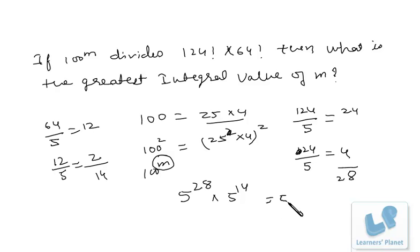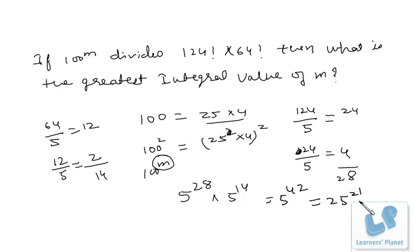That means precisely 5 raised to 42. Now 5 raised to 42 equals 25 raised to 21, and we are interested in 25-and-4 combinations. Since 25 appears 21 times, we will get 21 combinations of 25 and 4 — the extra 4s are not relevant. So it will be divisible by 100 raised to m where m equals 21.